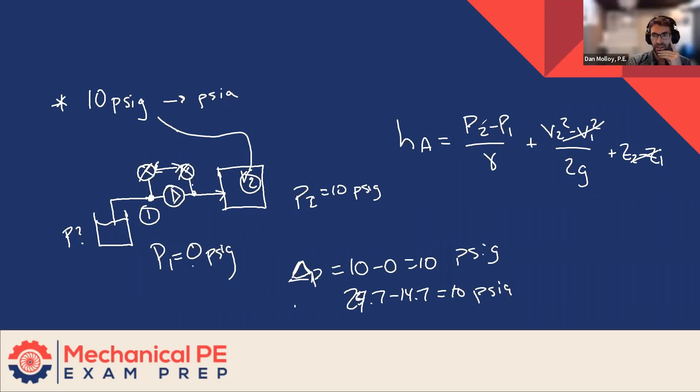So there's definitely a Delta P, right? Otherwise, what are we doing? Why do we have a pump at all? We must have some Delta P here. So if we assume P1 is zero, what do we mean? We mean zero PSIG. So then if P2 is 10 PSIG, then the difference is 10.